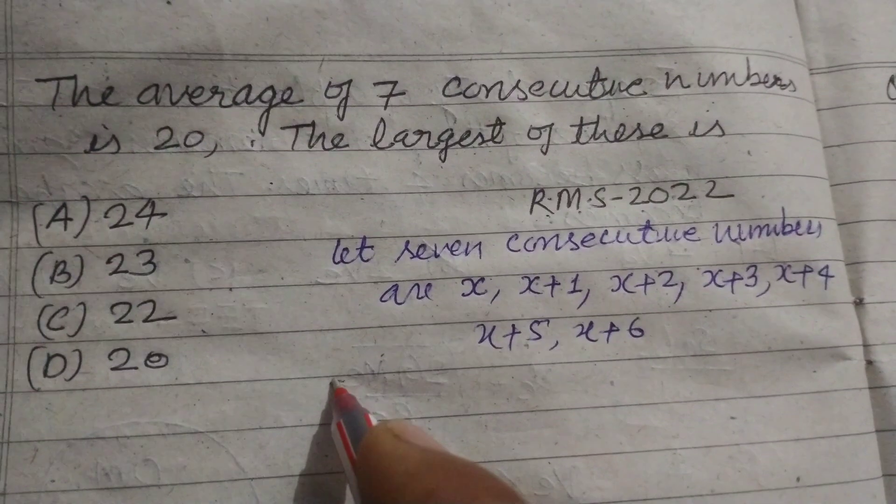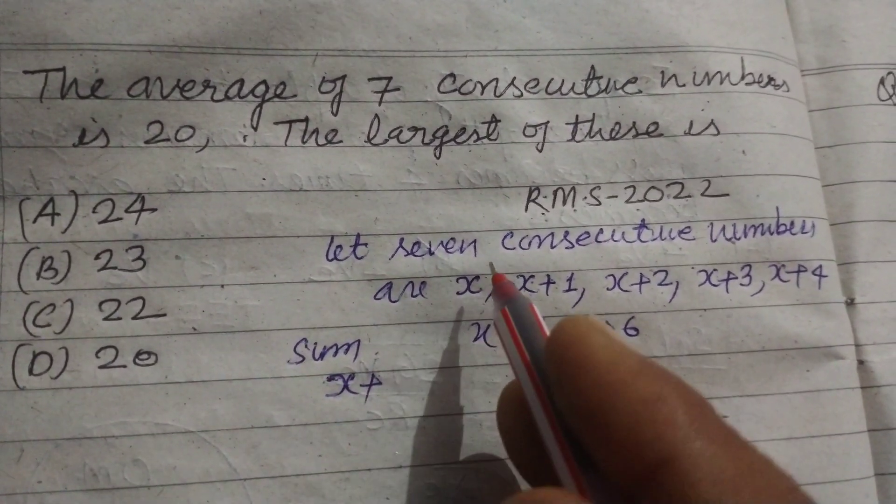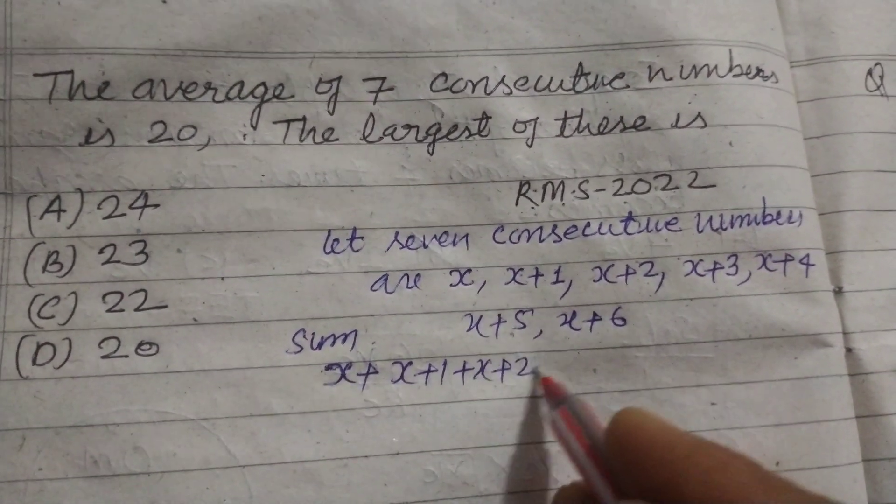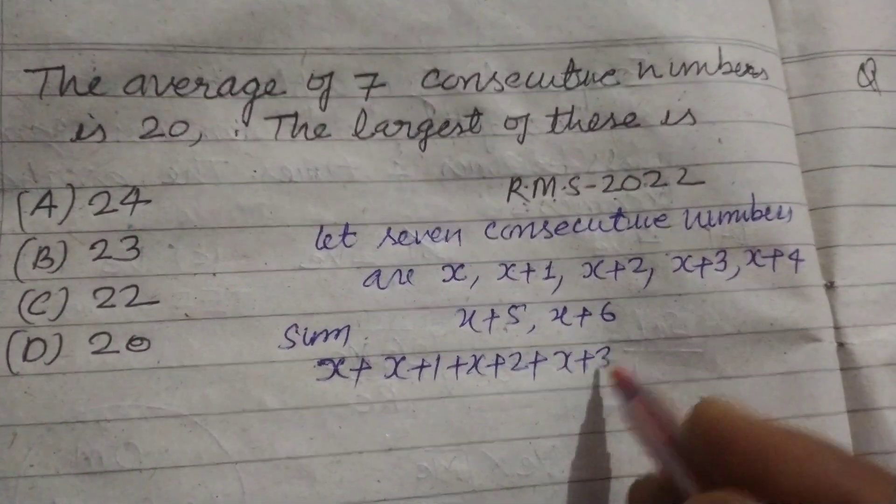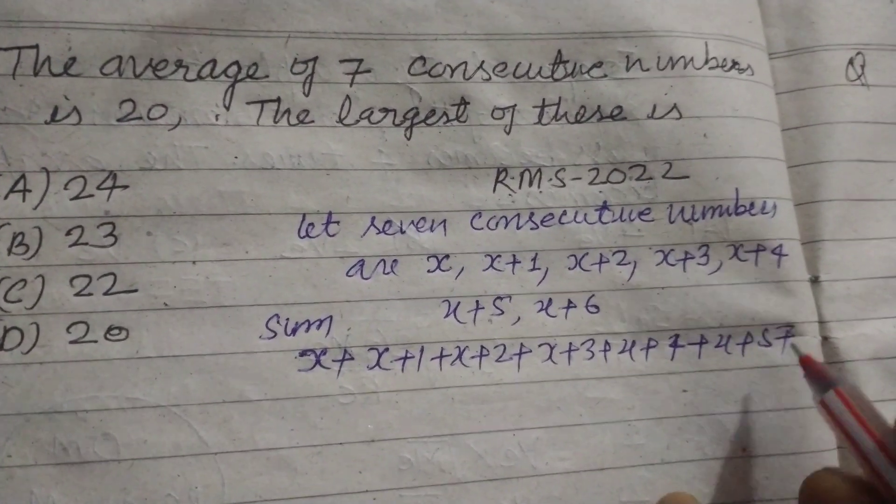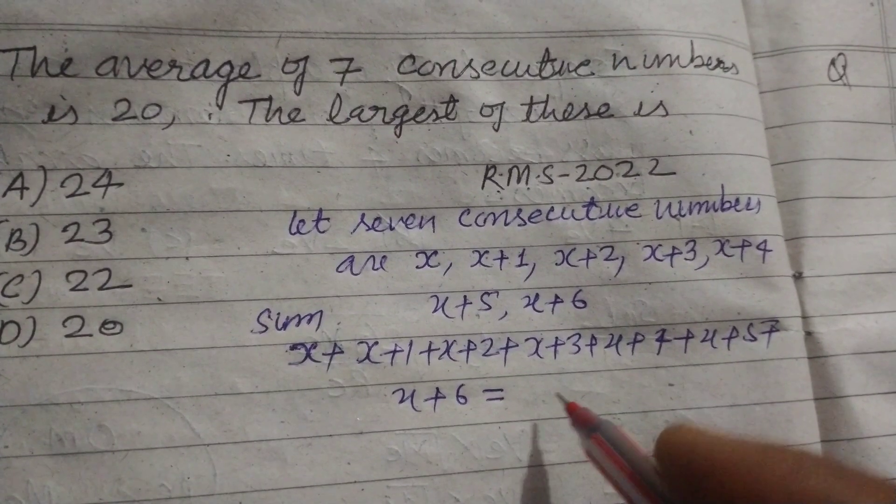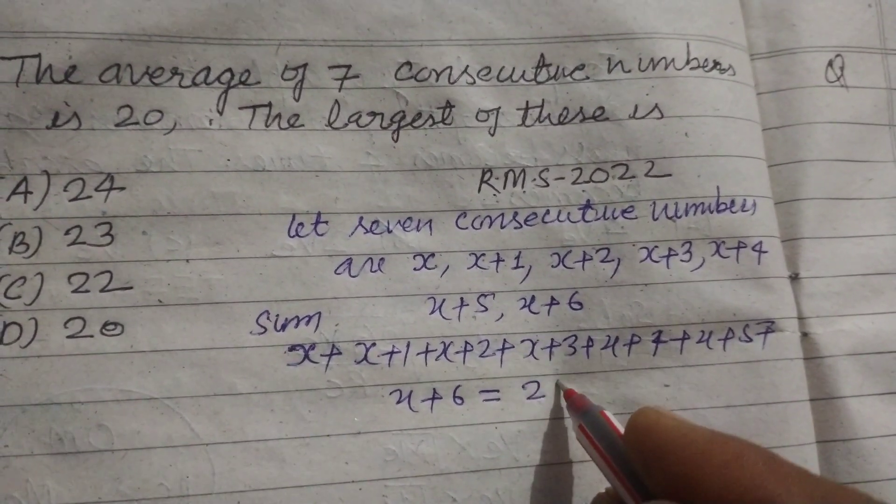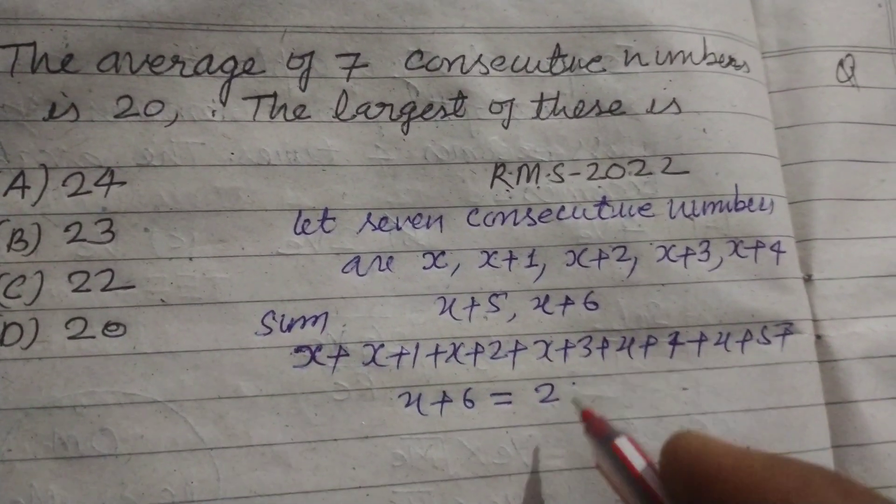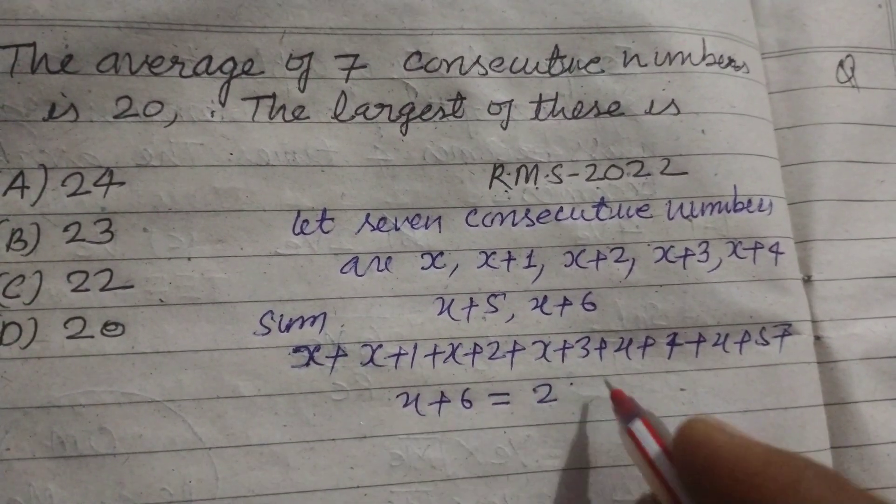The sum of these numbers is x + (x+1) + (x+2) + (x+3) + (x+4) + (x+5) + (x+6). The average of the numbers is given, so the sum of the numbers is x + x + x + x + x + x + x, which is 7x,